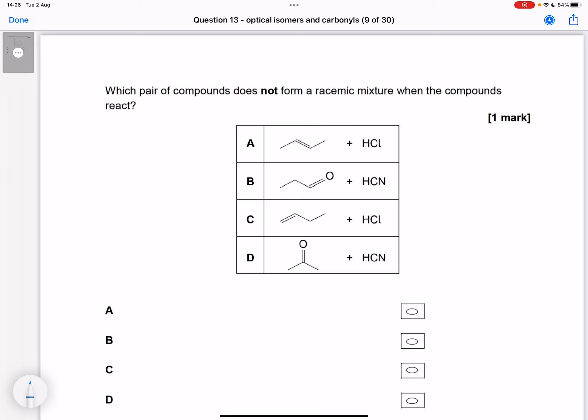Here we've been asked which pair of compounds does not form a racemic mixture. A racemic mixture is where we get equal amounts of the two enantiomers, so we need to be forming something with a chiral carbon at the end of this reaction.